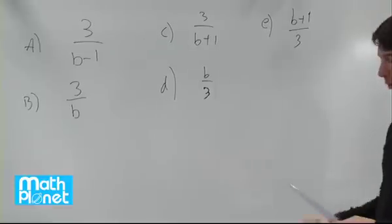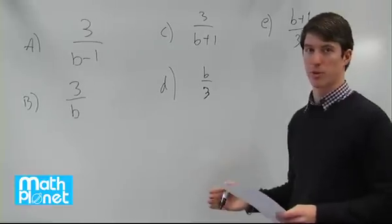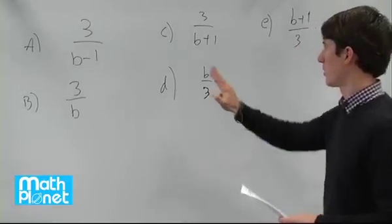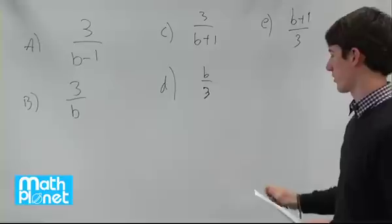So in this problem, all we know about b is that it's greater than 3. We need to look at one of these and see which one will give us the smallest value.